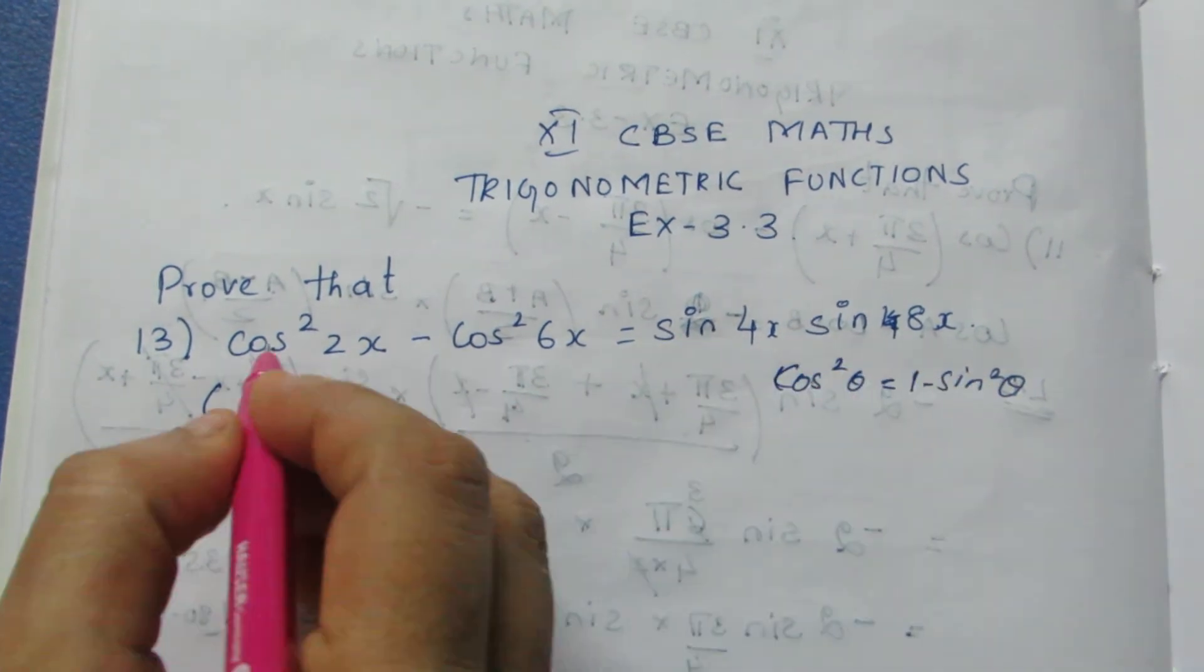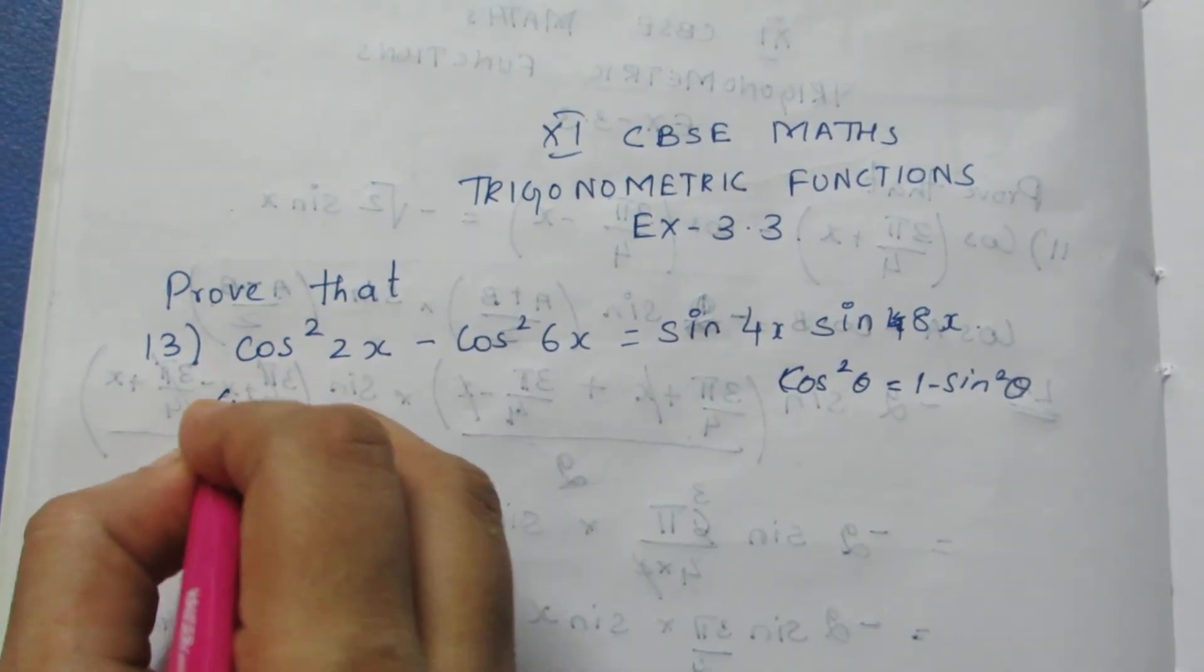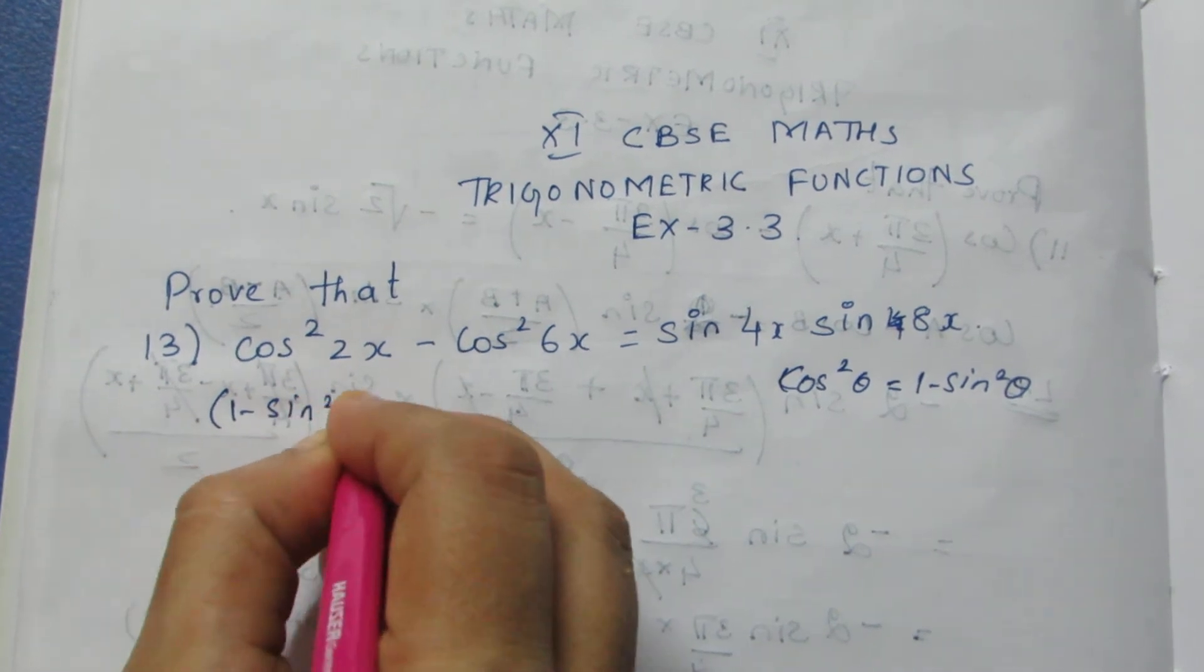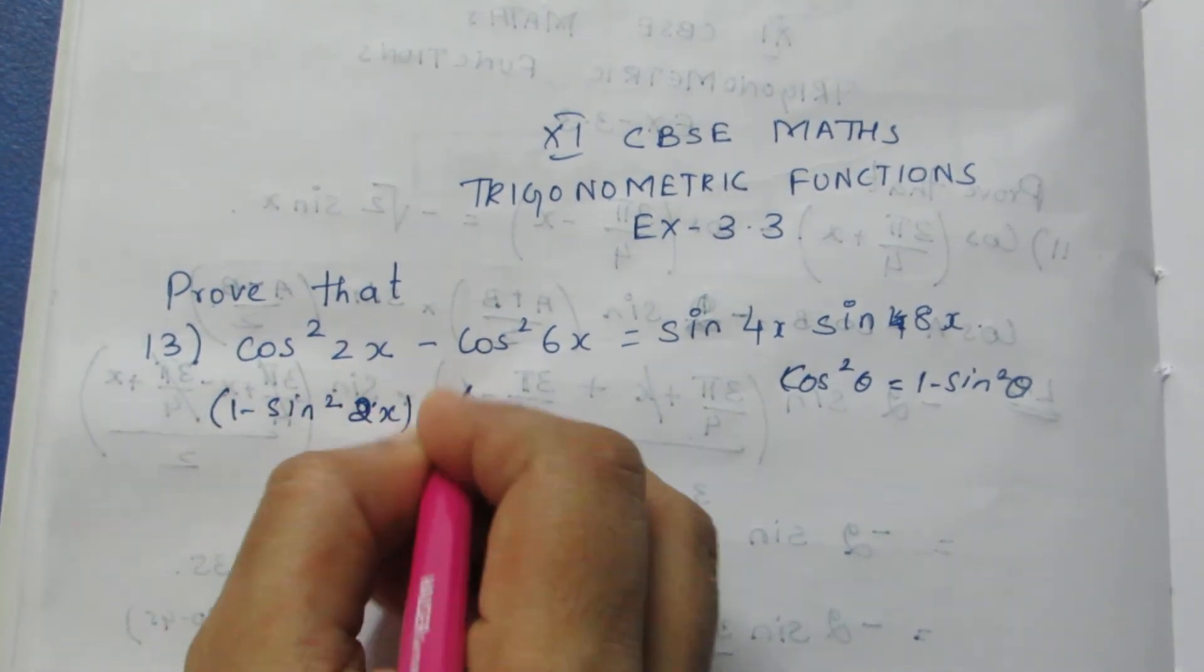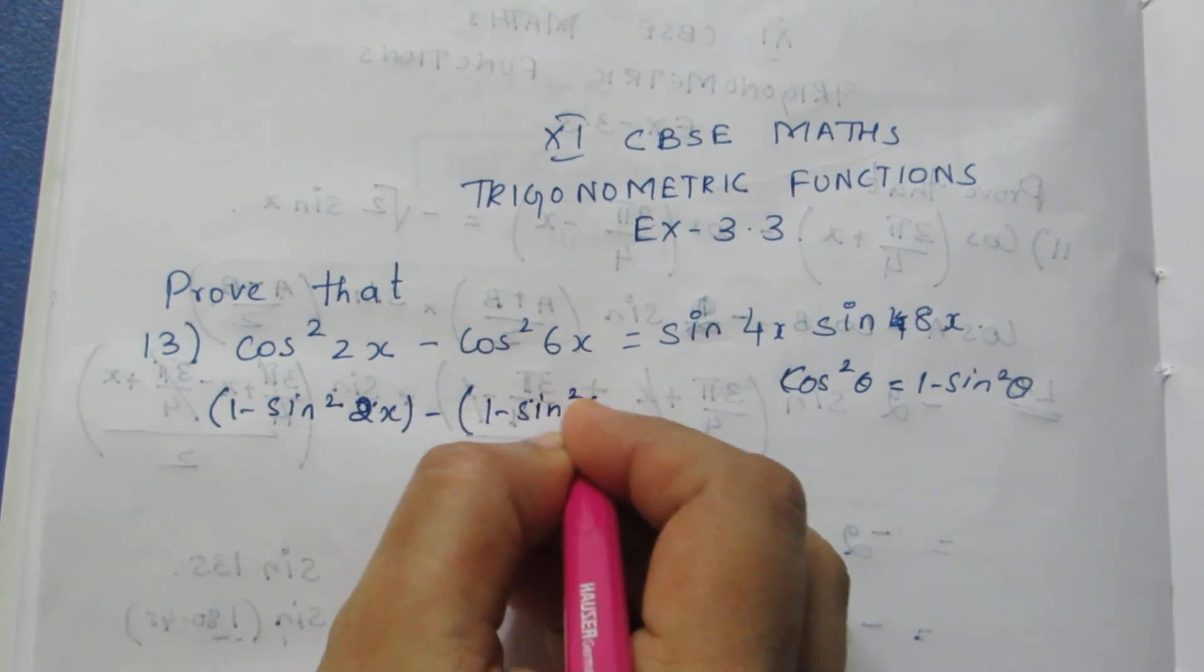So instead of cos²2x, I'm going to write (1 - sin²2x) - (1 - sin²6x). This is my LHS.